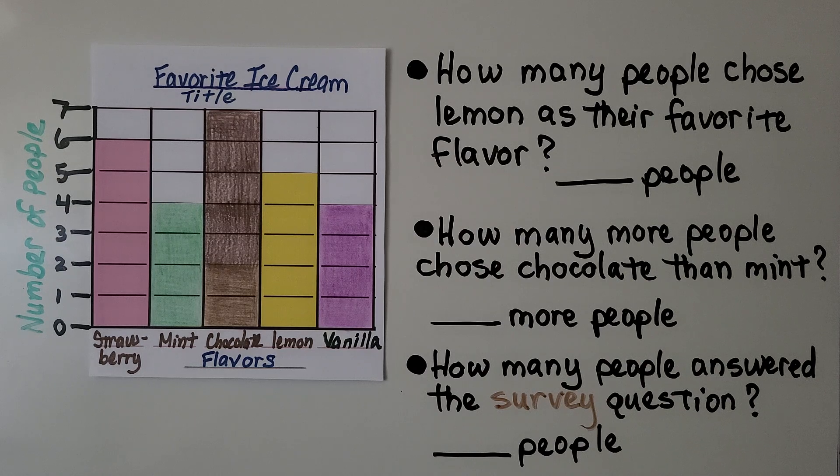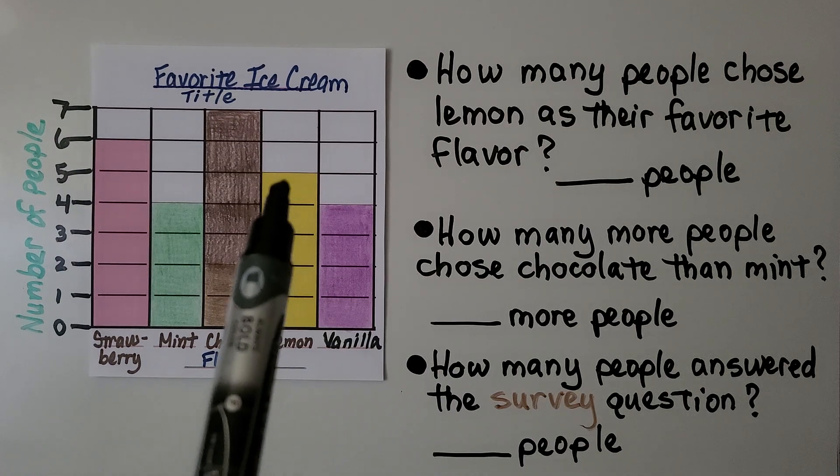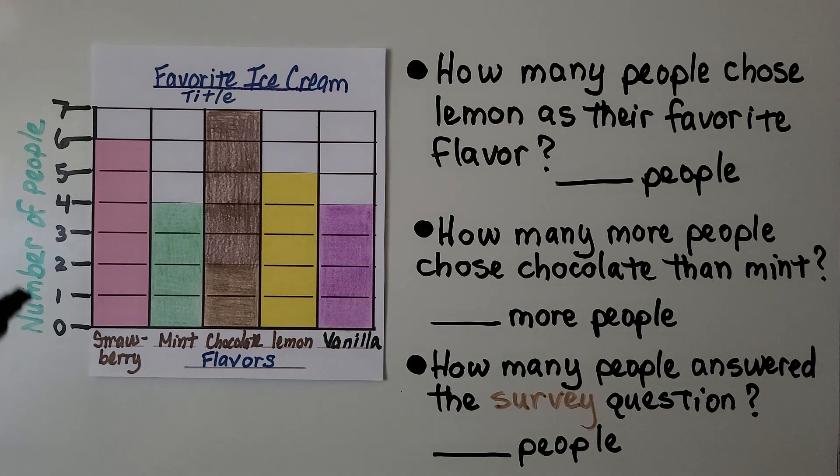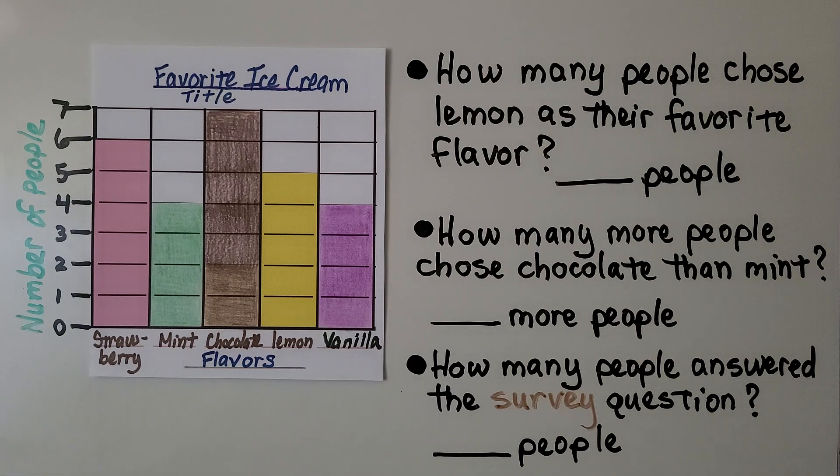So how many people chose lemon as their favorite flavor? We look at lemon. We go up and we see it stops here. It's at five. And that's the number of people. That means five people chose lemon.